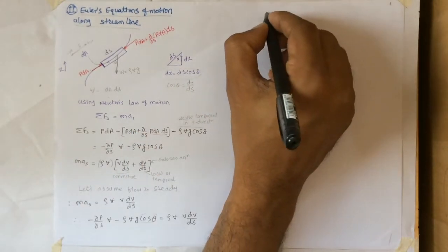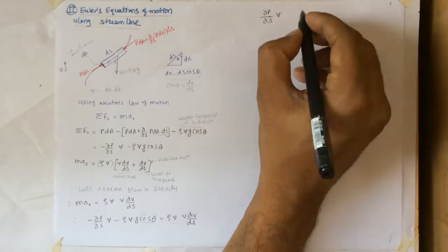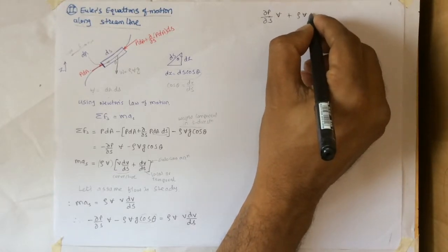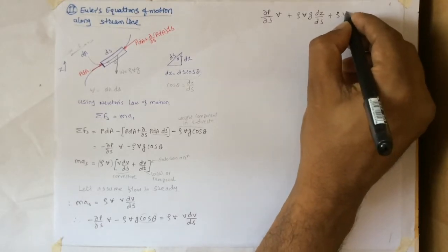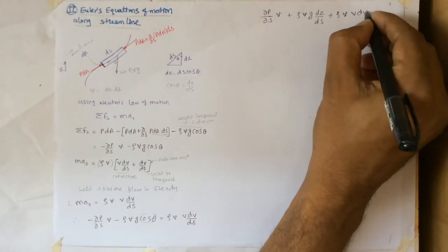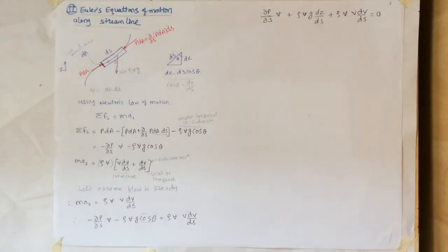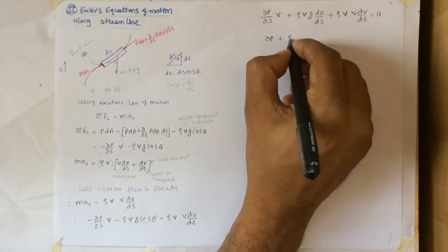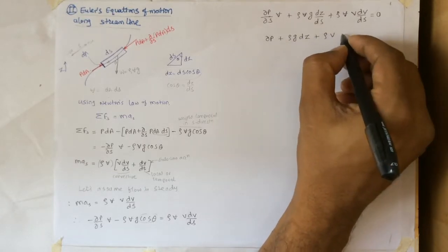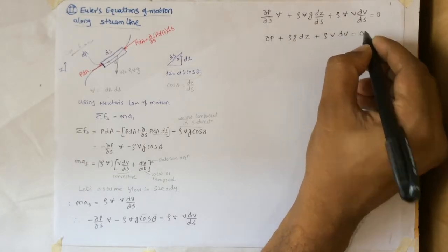After putting the value of cos theta and simplifying we get dp/ds times volume plus rho volume g dz/ds plus rho volume v dV/ds equals to zero. And further simplification yields dp plus rho g dz plus rho v dV equals to zero.